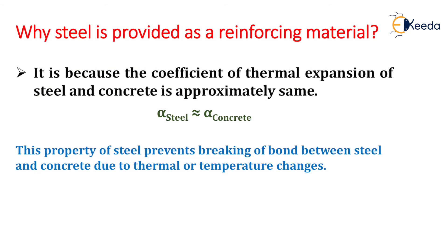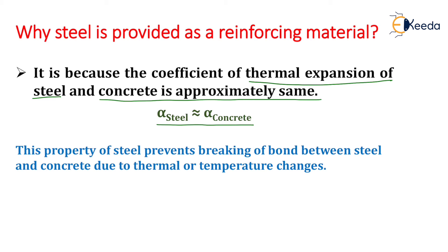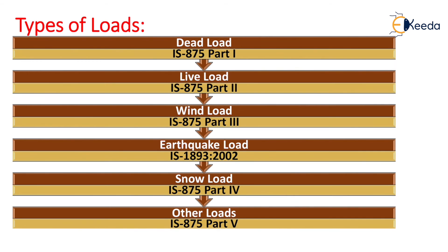One more question arises: why is steel provided as a reinforcing material? It is because the coefficient of thermal expansion of steel and concrete is approximately the same — that is, alpha of steel is approximately equal to alpha of concrete. This property of steel prevents breaking of the bond between steel and concrete due to temperature changes.